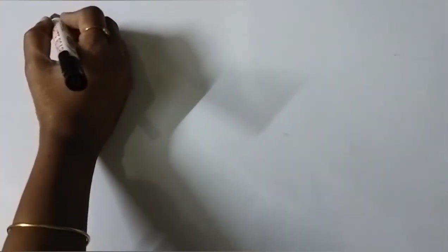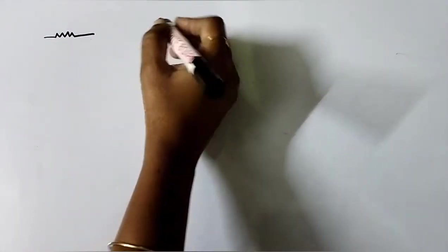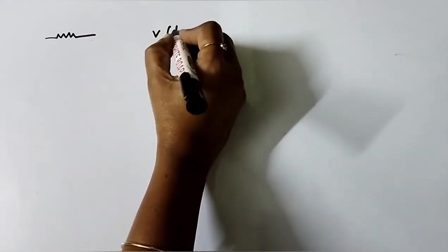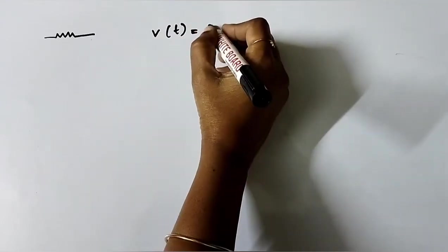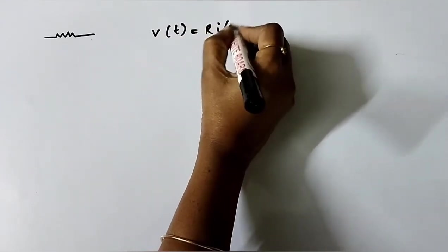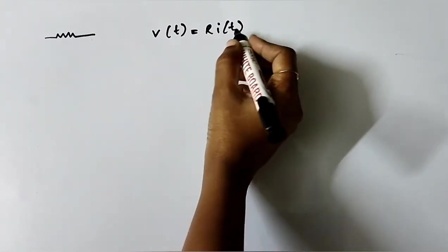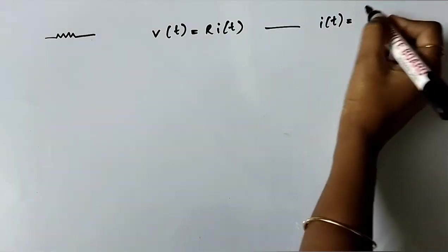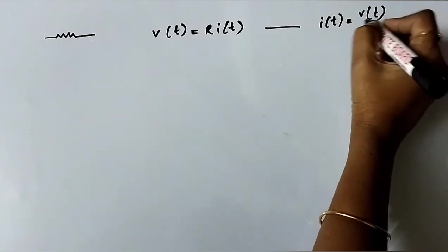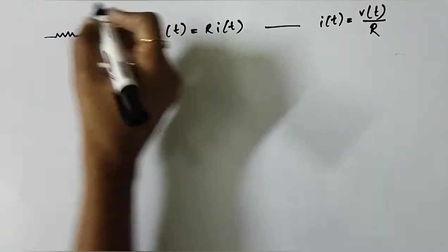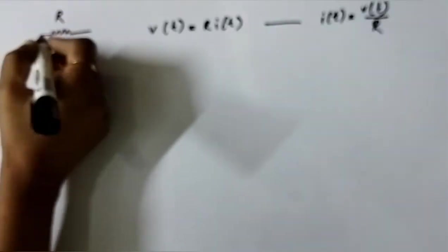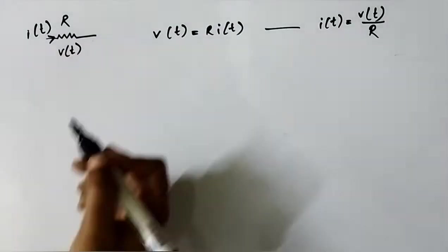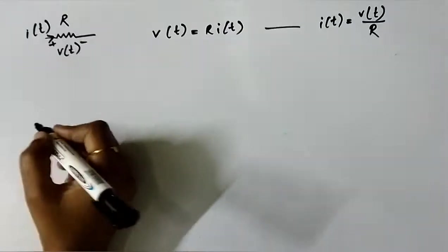For a resistor, the voltage-current relation is V(t) = R · I(t), and I(t) = V(t) / R. Here R is the resistance and V is the voltage across it.